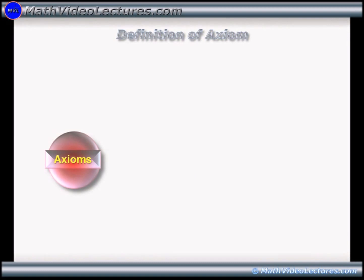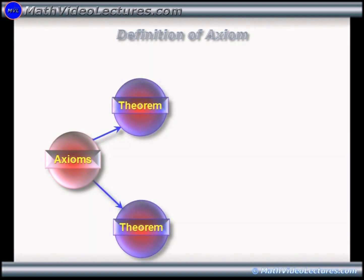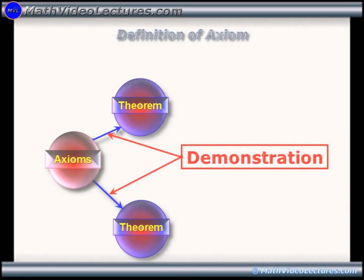In natural sciences, an axiom that complies with nature is called a law. In mathematics, a theorem is a proposition deducted from previously accepted axioms. The process of logical deduction of theorems is called demonstration.